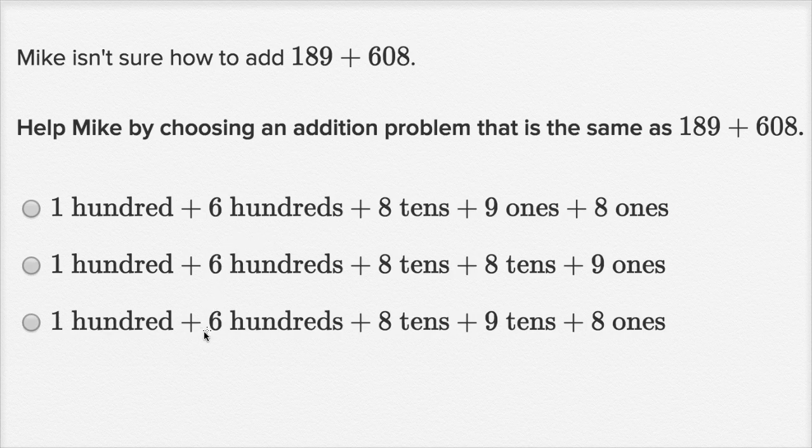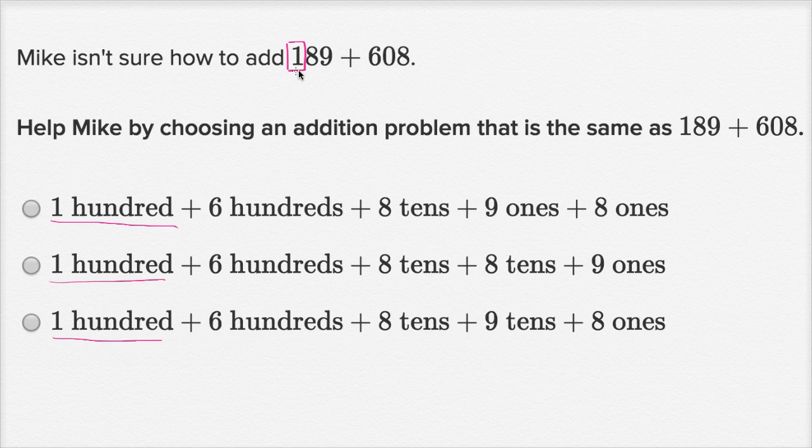Now let's look at these choices. Let's start with this first choice. Actually, all of these choices start with having 100. They all have 100. So where do we see 100 here? Well, in 189, we have a one in the hundreds place. So this right over here, that is one hundred.